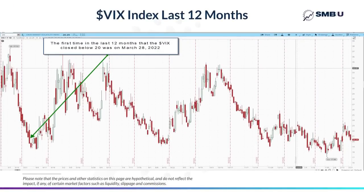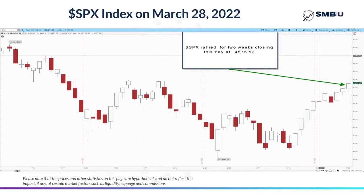So with that said, let's head back to the first date in the last 12 months where the VIX dropped below 20. That date was March 28th, 2022, when the VIX closed at 19.63, just below 20 for the first time in the last 12 months. If we look at the S&P 500 index, also known as the SPX index, you'll see that it closed at 4575 that day in what most people would call a pretty bullish looking chart, actually.